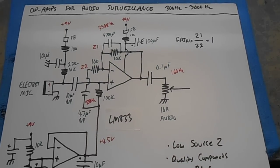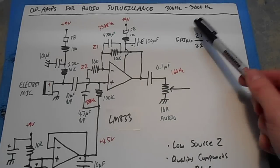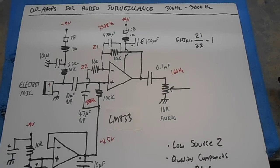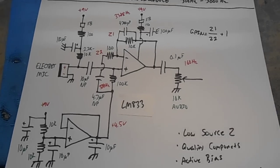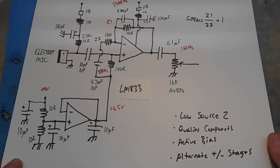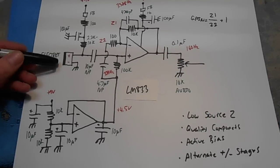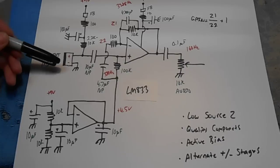Here are some tips for using op-amps for audio surveillance applications between 300 Hertz and 3000 Hertz. I'm going to start off with the standard electret microphone element. It's a common microphone element in places like Radio Shack or whatever.